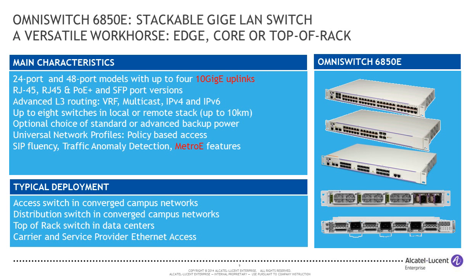Moving down in terms of capacity, we have the 6850E. This switch has been the workhorse of the portfolio for a number of years. It's used as an intelligent edge, and can be used as a small core or a small top-of-rack switch. It has PoE support, all the Layer 3 protocols you need, and can be used with licensing as a Metro Ethernet CPE — a very versatile switch.